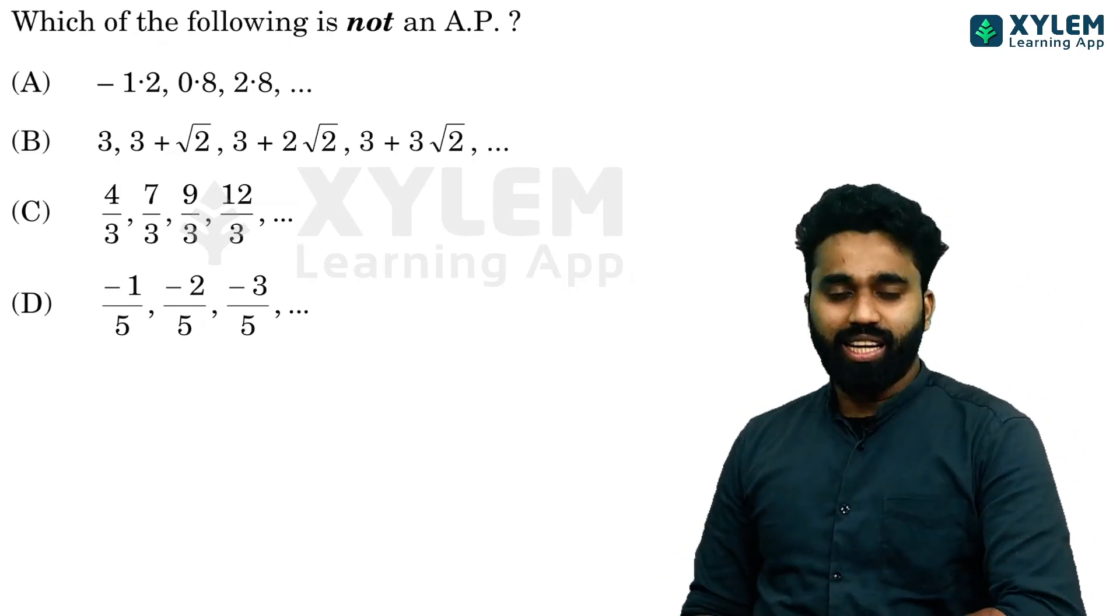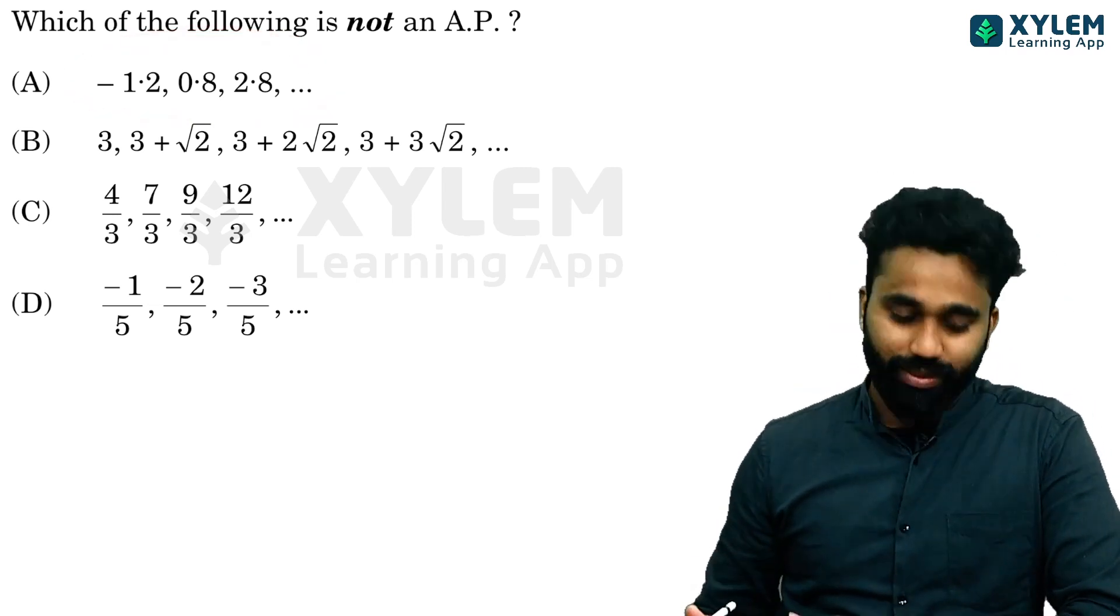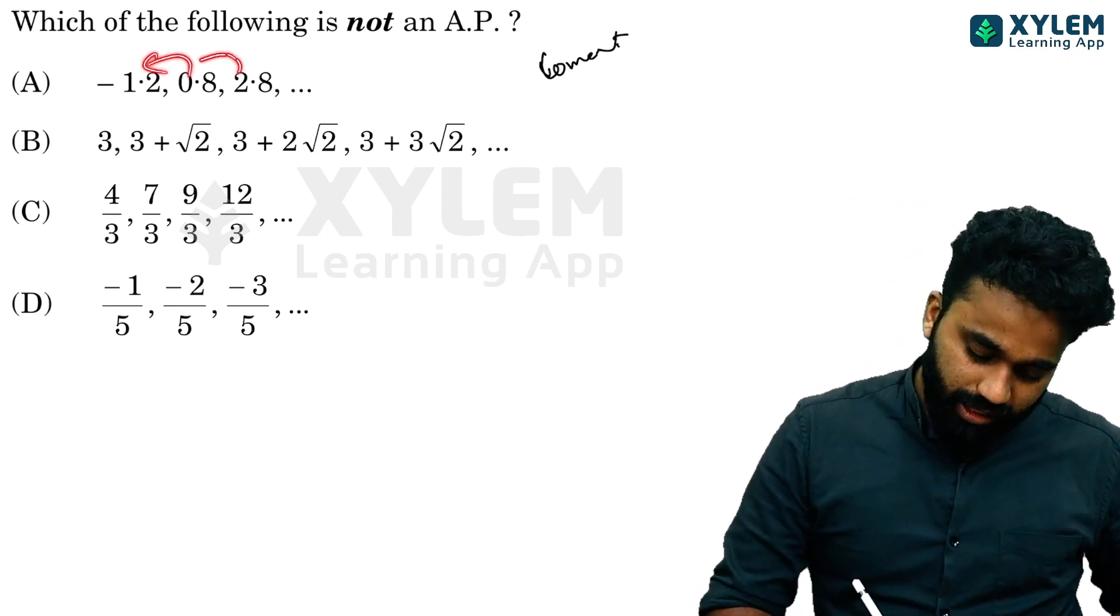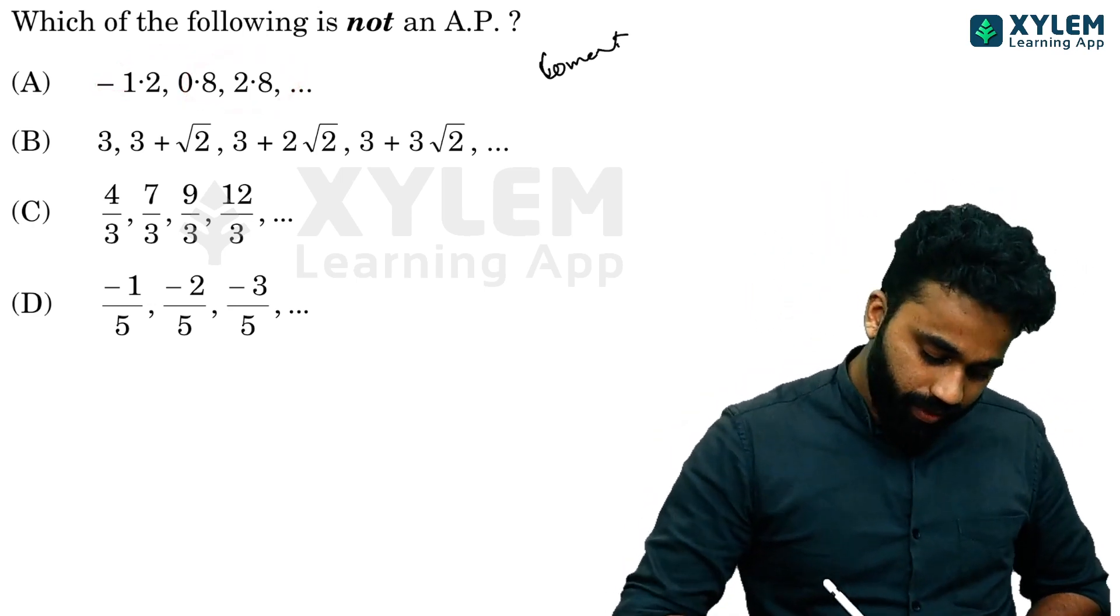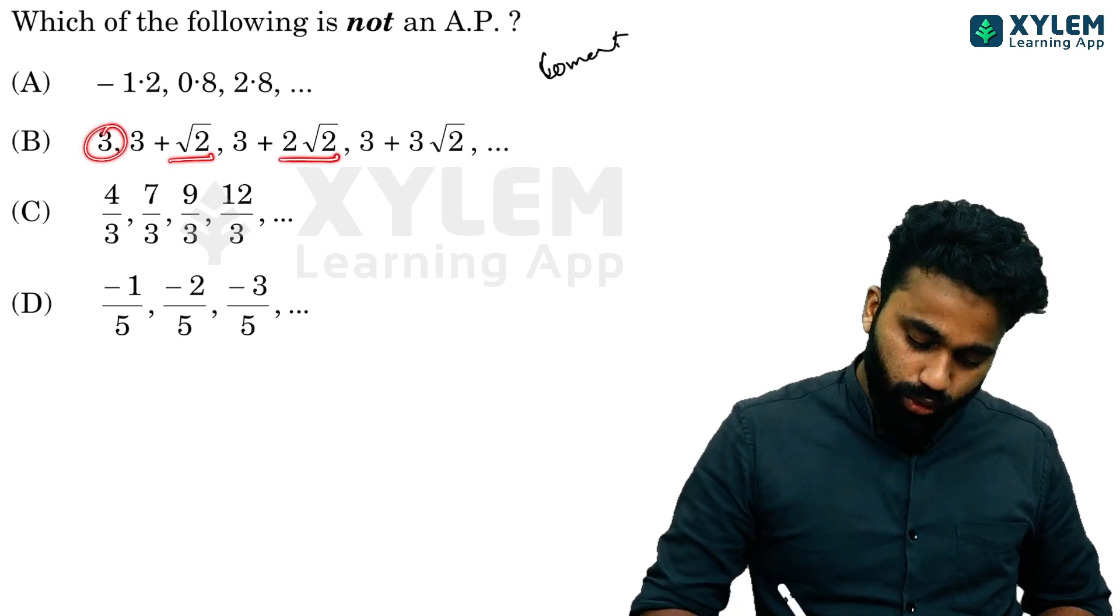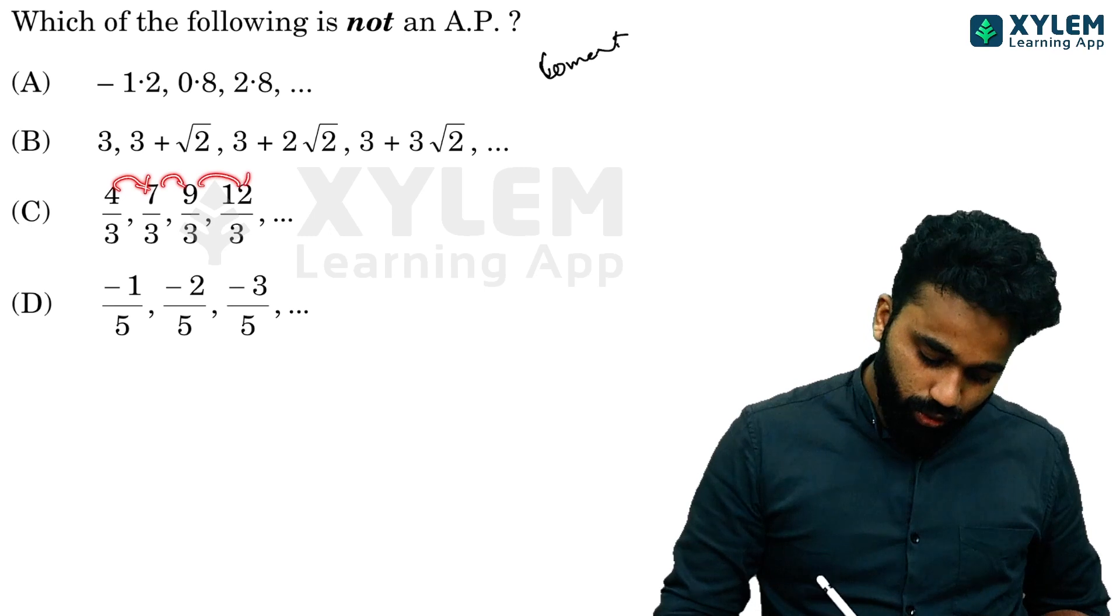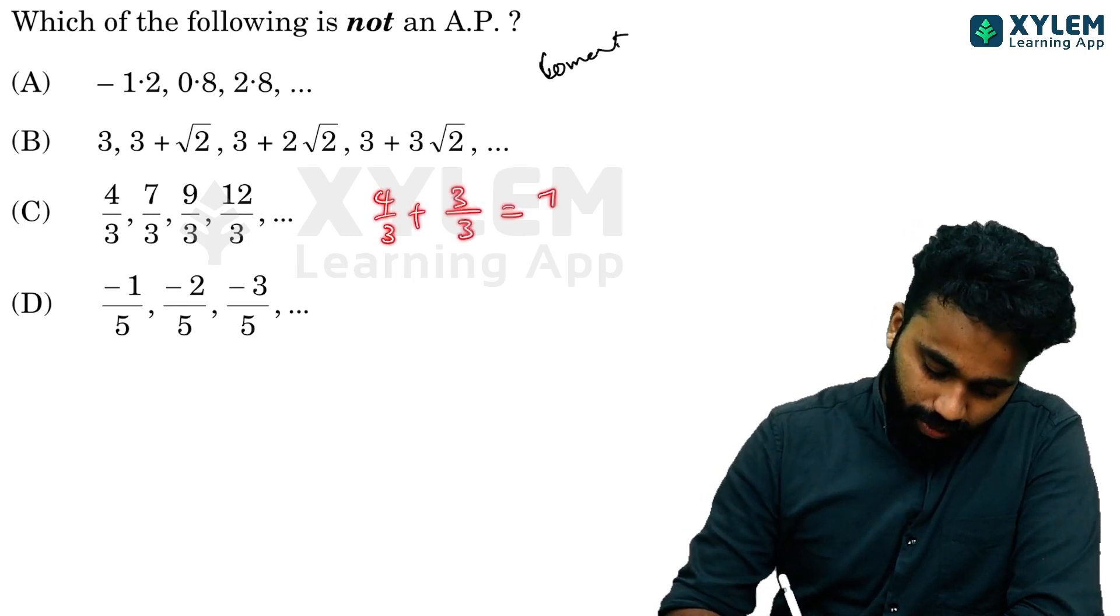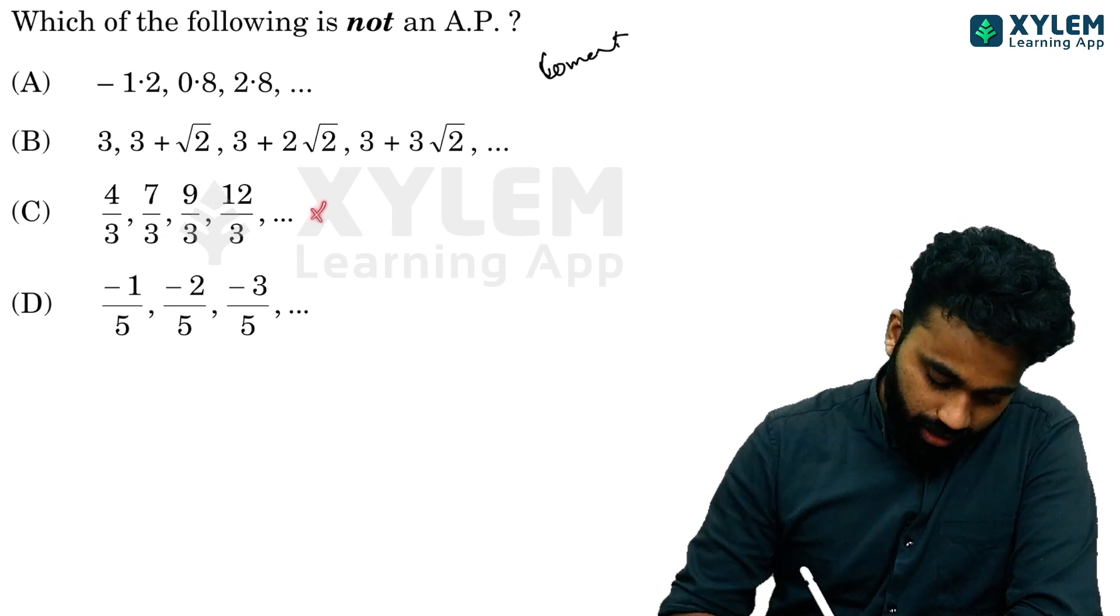Which of the following is NOT an AP? Let me check option B: 3, 3 plus root 2, 3 plus 2 root 2, 3 plus 3 root 2. The common difference is root 2 throughout. Option C: 4/3, 7/3, 10/3—common difference is 3/3 equals 1. You can verify all options.